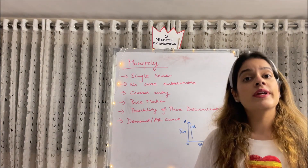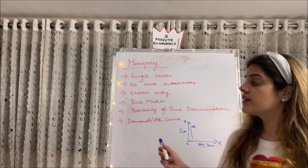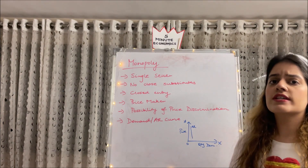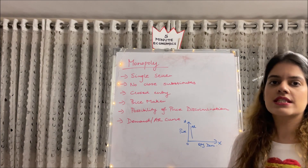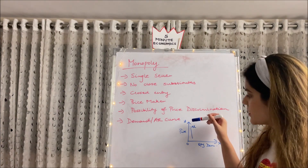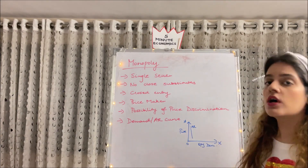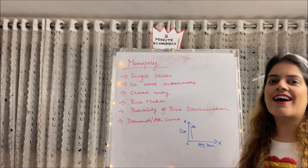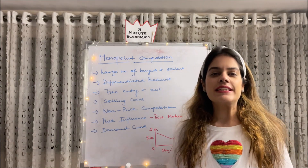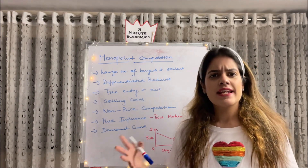Lastly, the demand or AR curve for a monopoly is downward sloping. It slopes downward because the monopolist tries to lower the price in order to boost sales. Since there are no close substitutes available, the curve is pretty much less elastic or inelastic. This blue downward-sloping AR line is the demand curve for a monopolist.